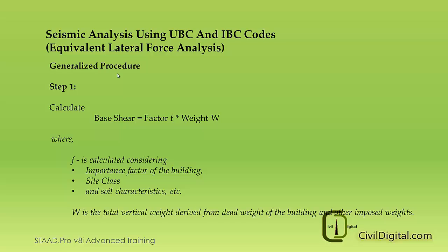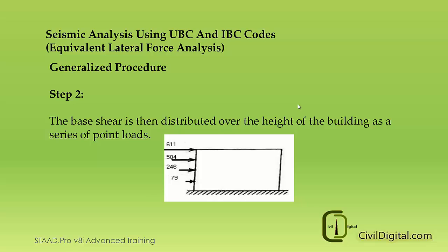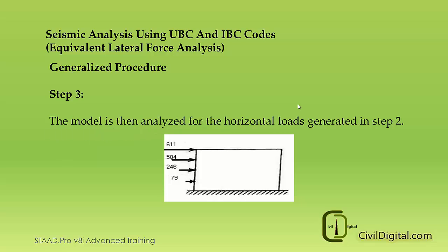The equivalent lateral force analysis method can be generalized into three basic steps. In step 1, we will calculate the base shear. To calculate the base shear, we have to multiply a factor F with the seismic weight of the structure W. The seismic factor F is calculated by considering the importance factor of the building, the site class and the soil characteristics of the site, whereas W is the total vertical weight derived from the dead weight of the building plus a factor of imposed weights. After calculating the base shear, it is distributed over the height of the building as a series of nodal loads, and the loaded building is then analyzed for these horizontal loads generated in step 2.